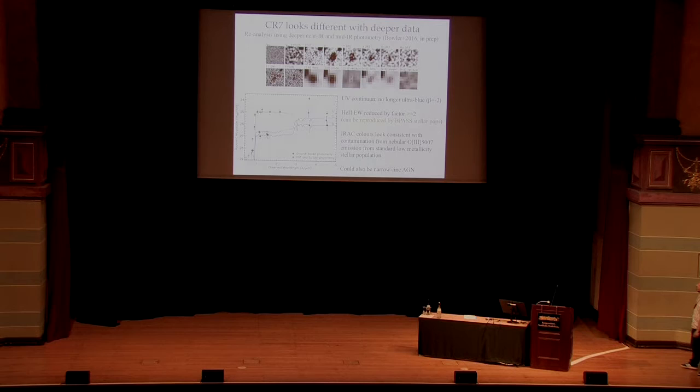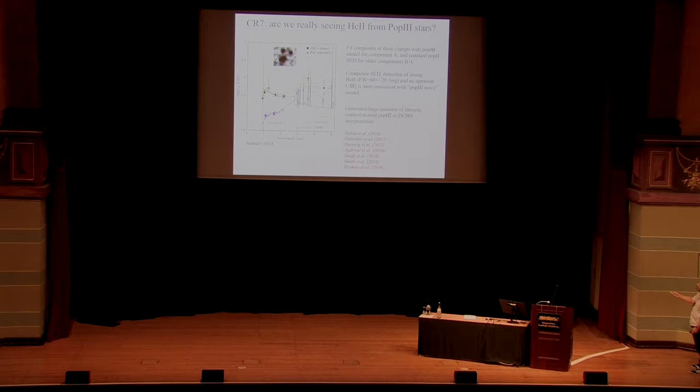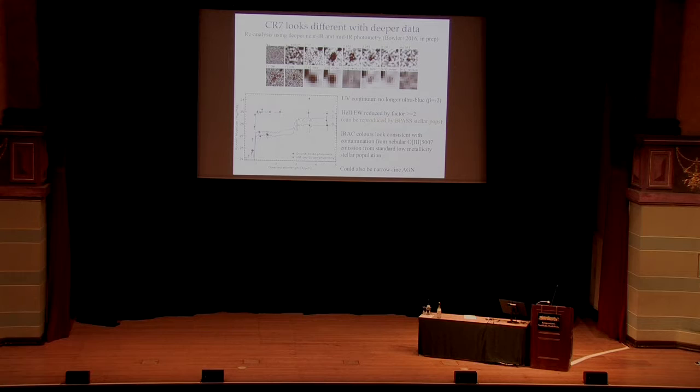So what we've been doing, key data to this is the near-infrared data and the long wavelength IRAC data. That's the data that holds the key to what's going on with this object. So over the last year, we've accessed from the ongoing UltraVista survey much deeper data in this regime, and from a Spitzer survey called SPLASH, much deeper data in this regime as well. So to have another look at this object. And this is a paper that Rebecca will probably put on the archive next week or the week after.